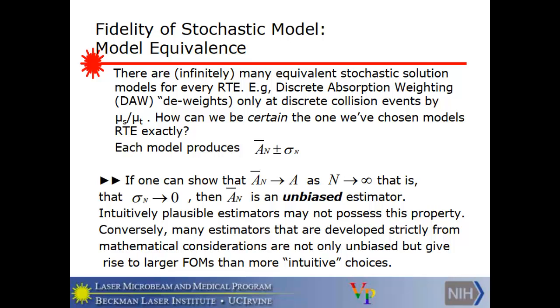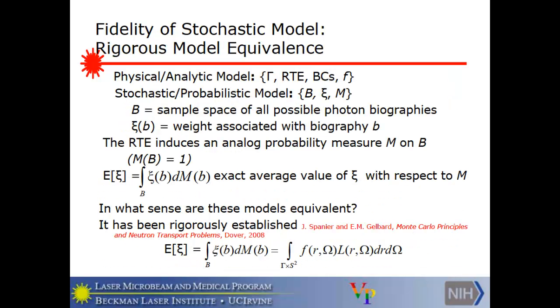Those are the kinds of estimators we favor. Not all estimators by any stretch of the imagination are unbiased. Intuitively plausible estimators may not possess this property. It's strange, but you can think of things that seem to mimic the physics and aren't quite right. And conversely, many estimators that are developed strictly from mathematical considerations, they're not only unbiased, but they give rise to larger figures of merit than more intuitive choices. So this is one of the tools we have to design a Monte Carlo which is computationally more efficient than analog, is to look at non-standard kinds of ways of generating random walks and keeping track of them.